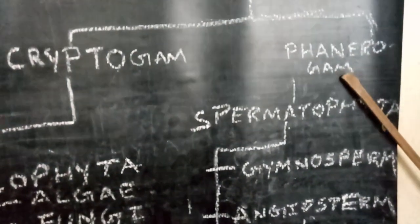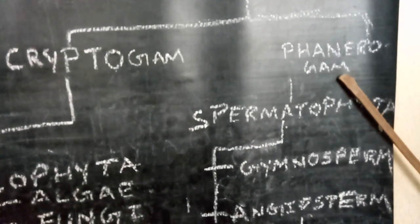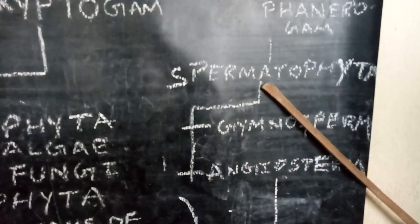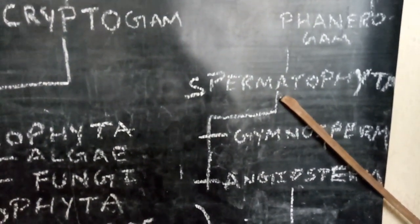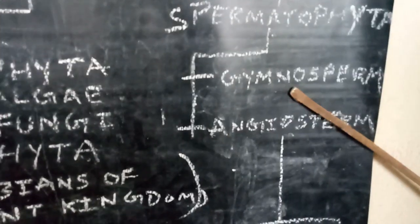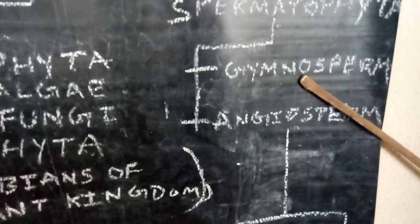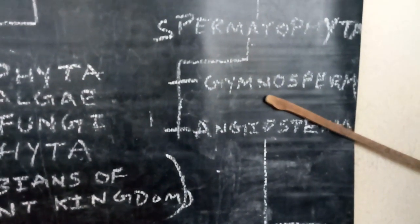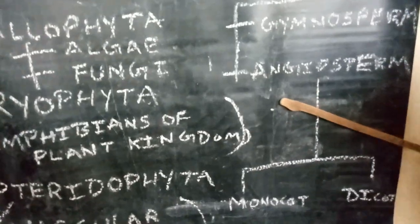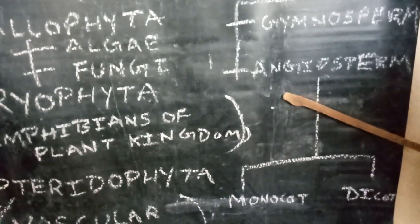Phanerogams are flowering and seed-producing plants. The only division of Phanerogams is Spermatophyta. It has two subdivisions: Gymnosperm and Angiosperm. Gymnosperms have seeds without fruit wall. Angiosperm seeds are present inside fruit.